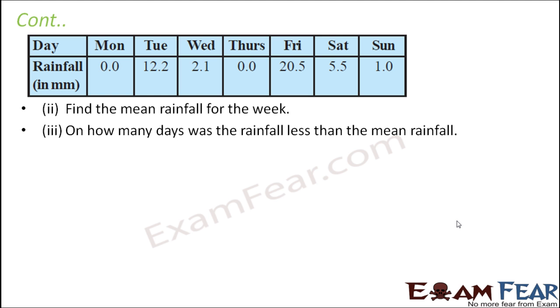Now find the mean rainfall for the week. When you have to find the mean rainfall, what do we do? In order to find the mean, we find out the sum of the data divided by the number of days for which the data is given. So let us find the sum. The sum would be 0 plus 12.2 plus 2.1 plus 0 plus 20.5 plus 5.5 plus 1.